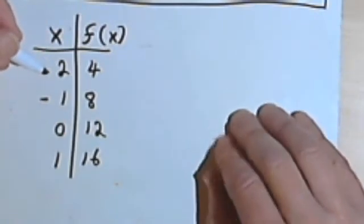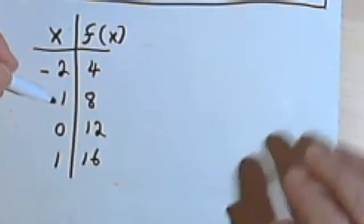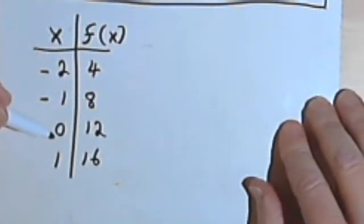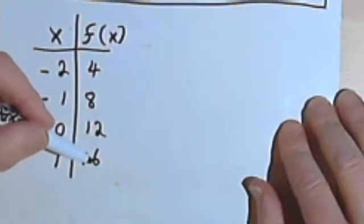When my input is negative 2, the output is 4. When the input is negative 1, the output is 8. When the input is 0, the output is 12. And when the input is 1, the output is 16.